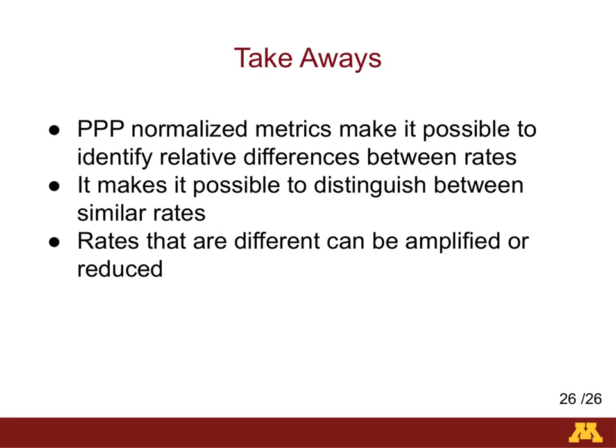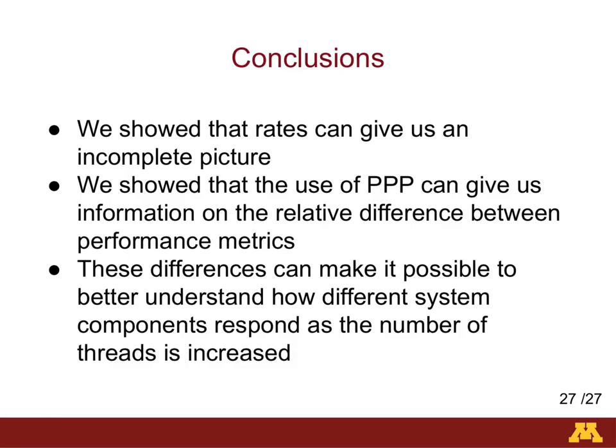The main takeaways: PPP-normalized metrics make it possible to identify relative differences between rates and distinguish between patterns among similar rates. Rates can be amplified or reduced. There are other techniques that provide information relative to baselines, such as the roofline model, which gives users an idea of how their code is performing relative to memory and floating-point peak performance. PPP can give users information relative to any baseline and can be used on any performance metric ratio. We show that rates can give an incomplete picture when both the denominator and numerator change simultaneously. The use of PPP can give information about the relationship between performance metrics relative to a baseline, helping understand how different components respond when changes to the program or system configuration are made.